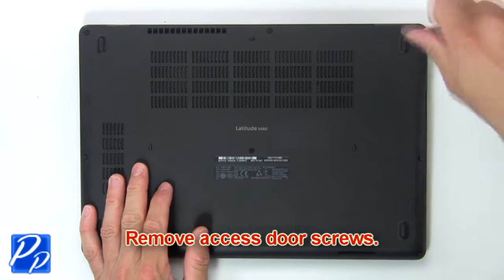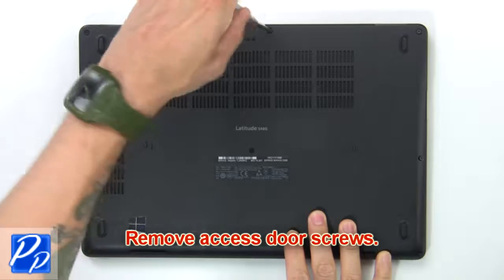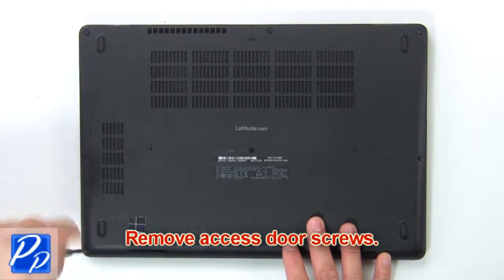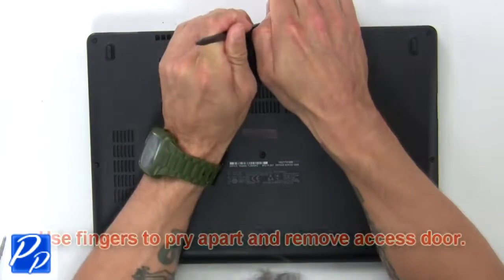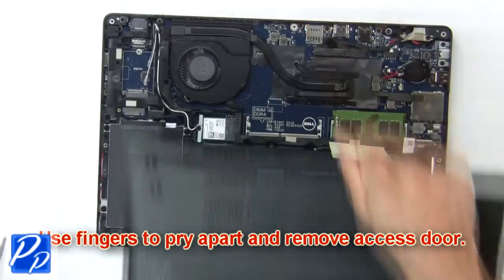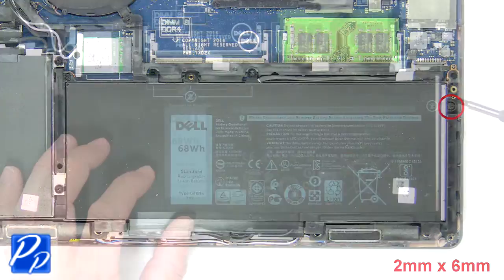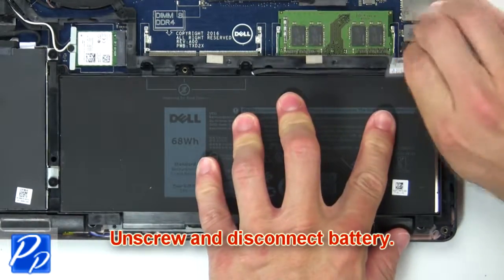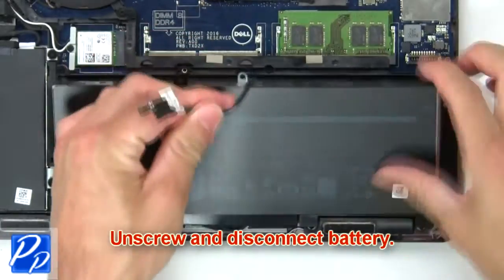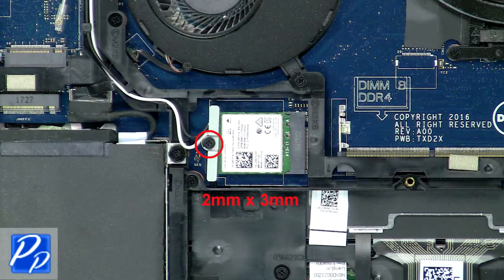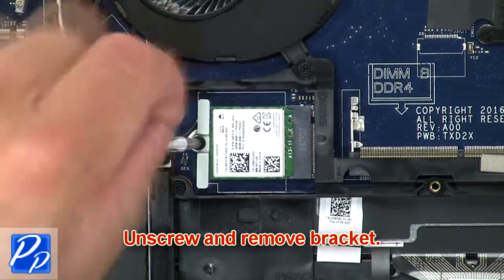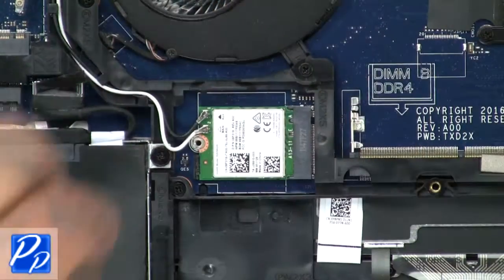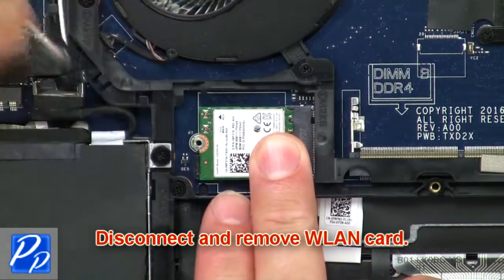Remove base cover screws. Then use fingers to pry apart and remove base cover. Now unscrew and disconnect battery. Now unscrew and remove bracket. Then disconnect and remove wireless card.